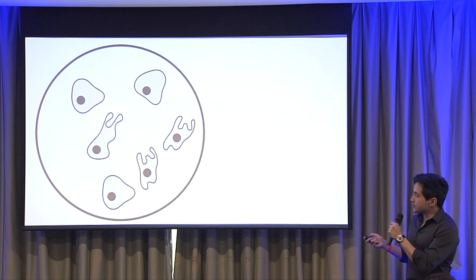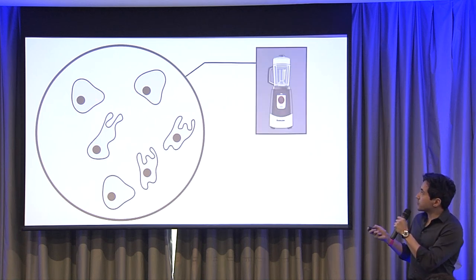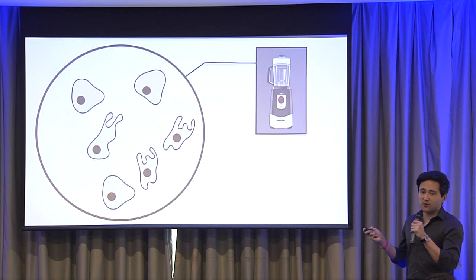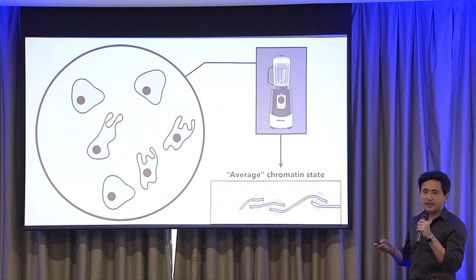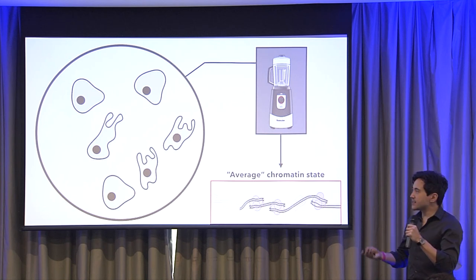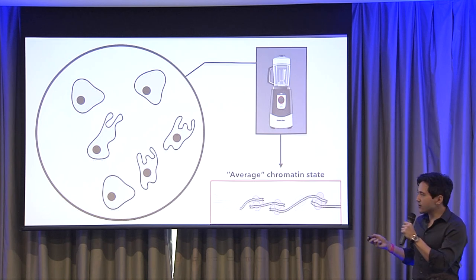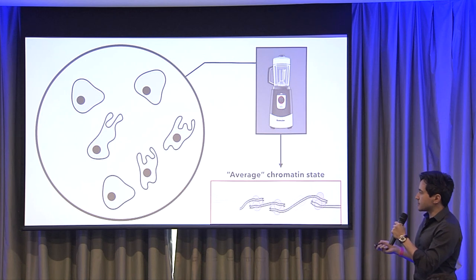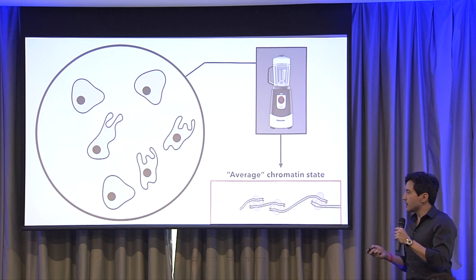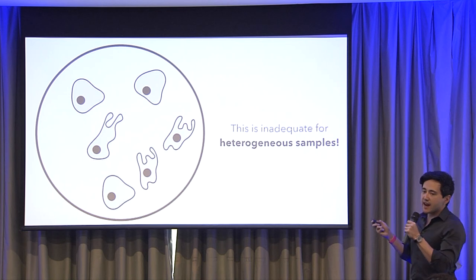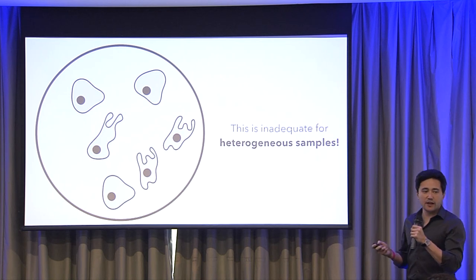So when you have a sample filled with different cell types, you more or less just put it in a blender and you get kind of an average chromatin state — it's not representative of every single cell type in there. Some regions will have a stronger nucleosome signal, others will not. This is inadequate for a heterogeneous sample.